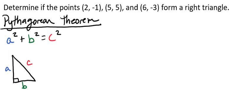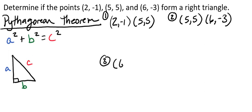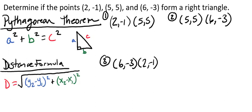In order to use the Pythagorean theorem, we first need to know the distance for each leg and side of the triangle. We're going to find the distance between (2, -1) and (5, 5) as our first distance, then between (5, 5) and (6, -3) as our second, and then between (6, -3) and (2, -1) as our third. Remember that our distance formula is the square root of the change in y's squared plus the change in x's squared.